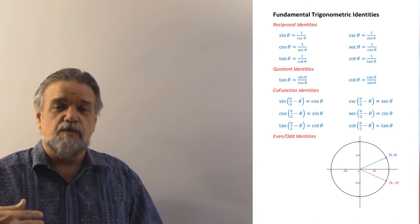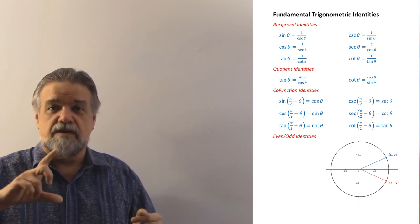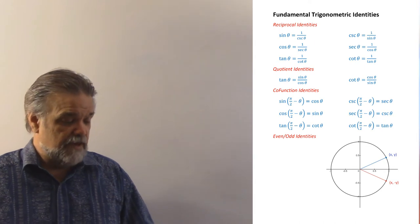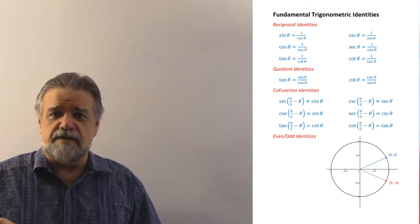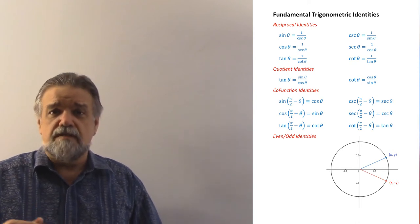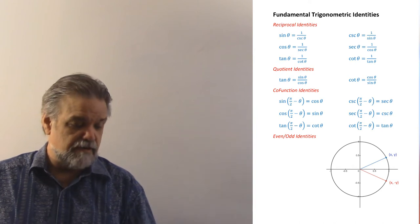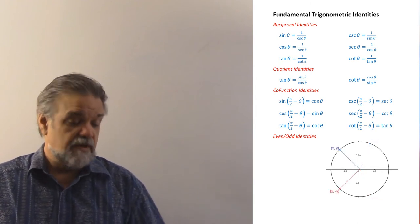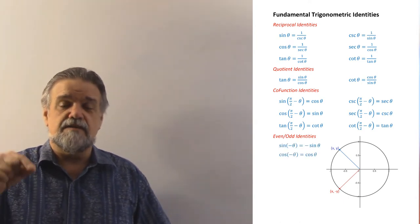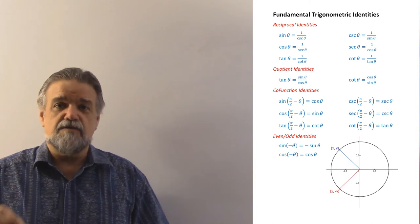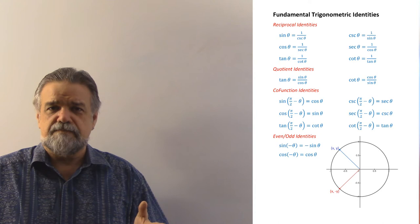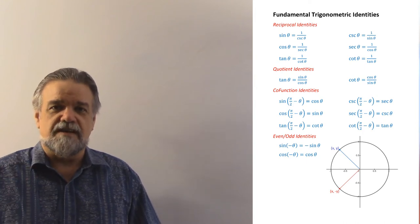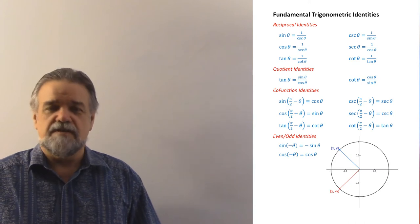When it reflects over the x-axis, the x-coordinate stays the same and the y-coordinate turns negative — or if it was negative, it turns positive. Either way, it's multiplied by negative one. So if x and y are the cosine and sine of theta respectively, then x and negative y will be the cosine and sine of negative theta, in any quadrant. That means the sine of negative theta is the negative sine of theta, and the cosine of negative theta is just the cosine of theta — the precise definition of odd and even functions.